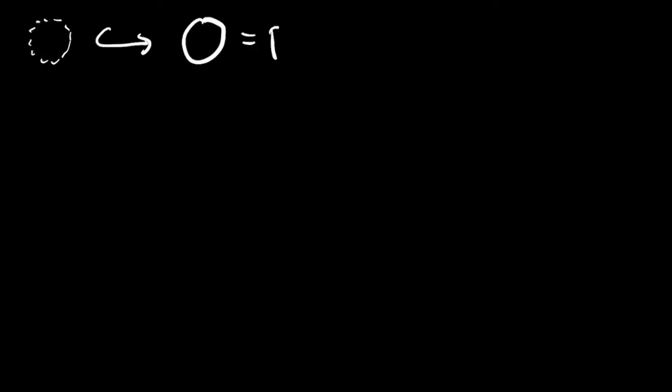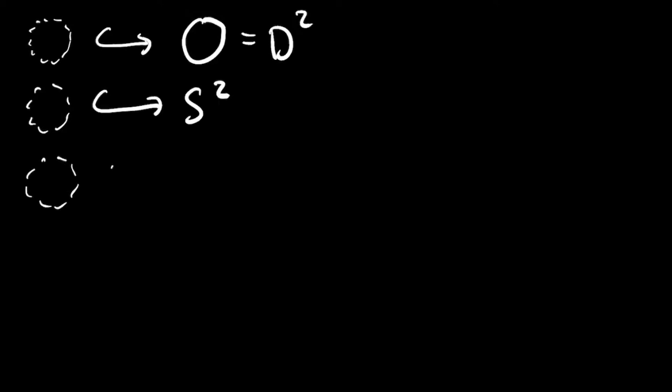Now let's look at some examples. You have a compactification of the open unit disk included in the closed unit disk by adding the boundary. There's another compactification of the open unit disk included in the sphere, which you can think of as first including in the disk and then identifying the boundary of the disk to a point. Or you can identify different parts of the boundary of the closed unit disk to obtain a compactification of the open disk as a dense subspace of the torus.